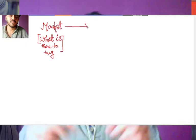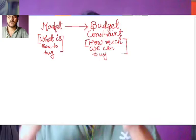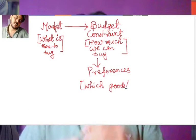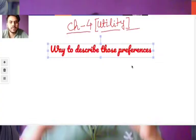In chapter 1, market, we read what is there to buy. In chapter 2, we found out how much we can buy — budget constraint. In chapter 3, we introduced the idea of preferences: which goods or consumption bundles we prefer. In this chapter, we will learn about a way to describe those preferences.